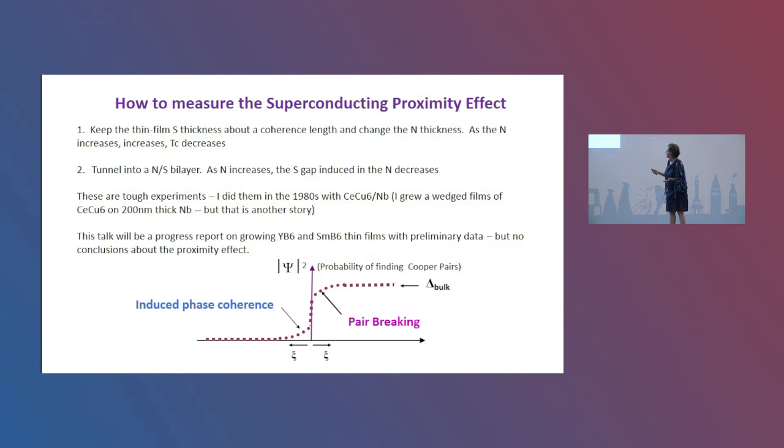The easier way to do it is you grow the normal metal and superconductor, and on top of the normal metal you grow a tunnel junction. As the normal metal gets thicker and thicker, there will be a density of states from the superconductor induced into the normal metal, and that should decrease as the normal metal gets thicker because there's less penetration of the coherence.